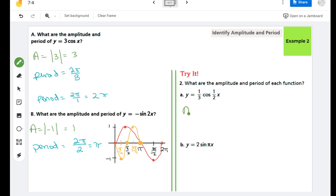Our amplitude again is the absolute value of the number in front of the trig function as long as it's multiplication, so our amplitude in this case is 1/3.